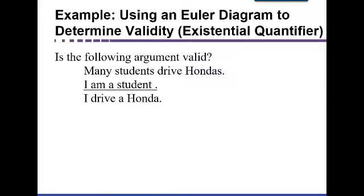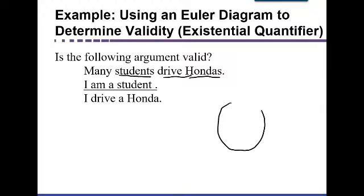Now let's look at one that doesn't involve 'all A's are B's' — it has an existential quantifier. Is this argument valid? 'Many students drive Hondas. I am a student. Therefore, I drive a Honda.' How do we draw a picture of 'many students drive Hondas'? We want a circle for students and a circle for people who drive Hondas. We don't know that all students drive Hondas — only some — so even with 'many,' all that means is an overlap.